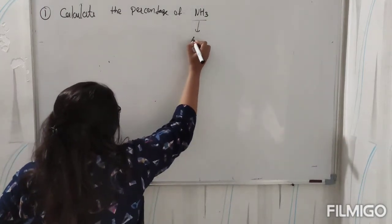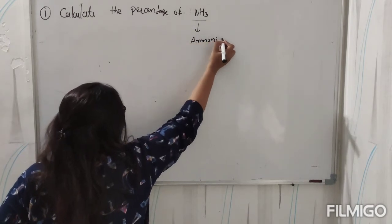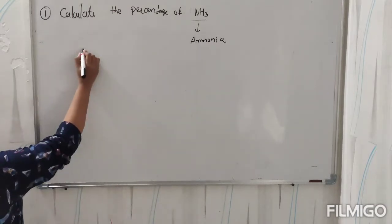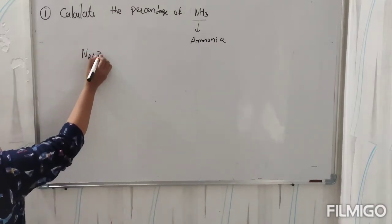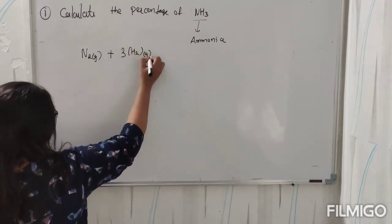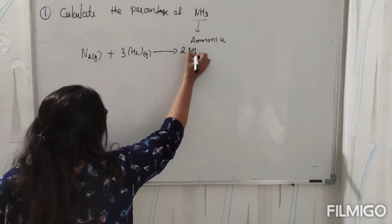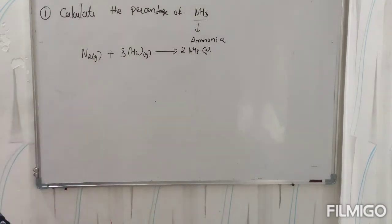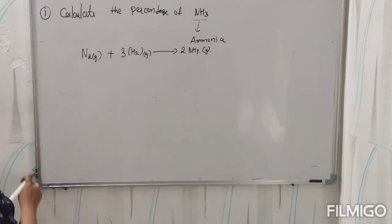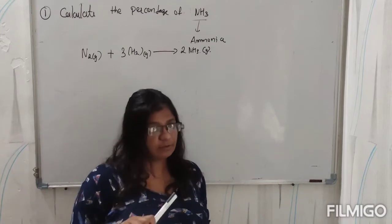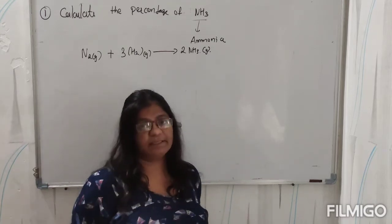NH3 is ammonia gas. Ammonia gas is the product when one molecule of nitrogen gas plus three molecules of hydrogen gas react with each other to give two molecules of NH3 in gaseous form. This is the standard equation. Some other important things about the reaction of N2 and H2 gas are also there, but first we will complete this numerical.